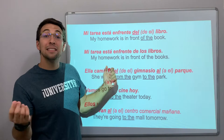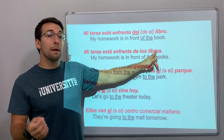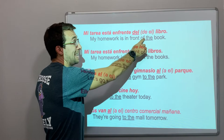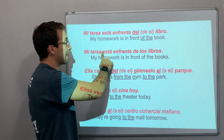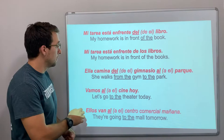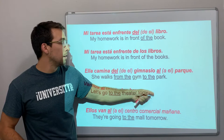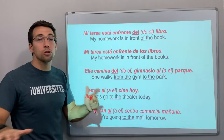But compare: mi tarea está en frente de los libros — my homework is in front of the books. Notice the difference — de el versus de los. De los is not a contraction, so it stays as de los. Next example: ella camina del gimnasio al parque — she walks from the gym to the park. Del is de plus el, and al is a plus el. These are the only two contractions in all of Spanish.